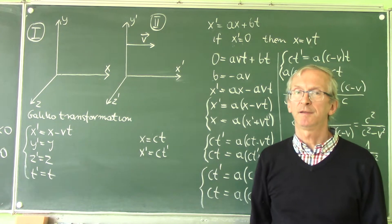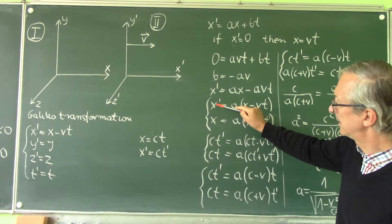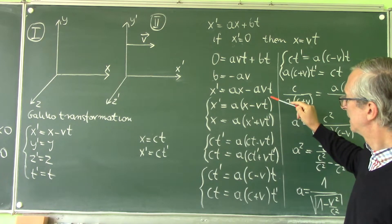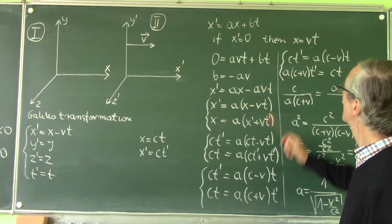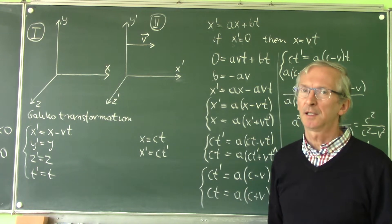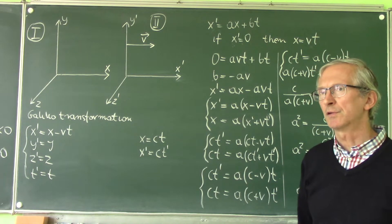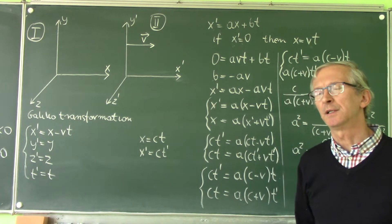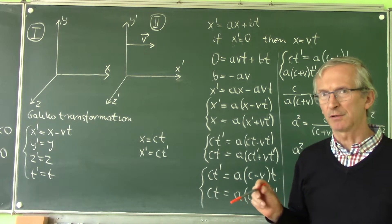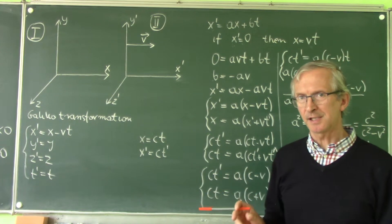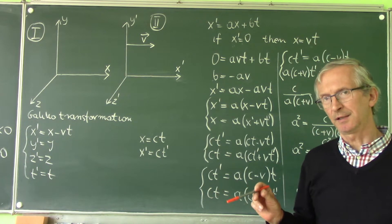To find the inverse transformation, we simply change x' to x, t' to t, and v to minus v. We should understand that v in this equation is not the magnitude of velocity — it is a component of the velocity vector. If the vector is parallel to the axis and in the same direction, the component equals the magnitude; if opposite to the axis, it equals minus the magnitude.